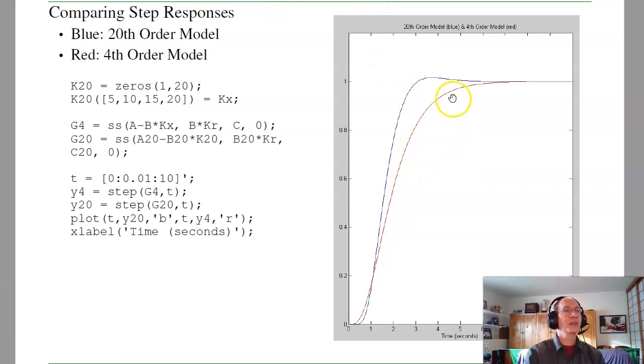If I compare the step responses, the blue line is the 20th order model, the red line is the fourth order model. I see that they're reasonably close. It's sort of working. That's typical with feedback control. I designed my feedback controller given a mathematical model. All models are slightly wrong. The more accurate the model, the more accurate your prediction. If the model is off, my prediction is going to be off. That's what you're seeing here.